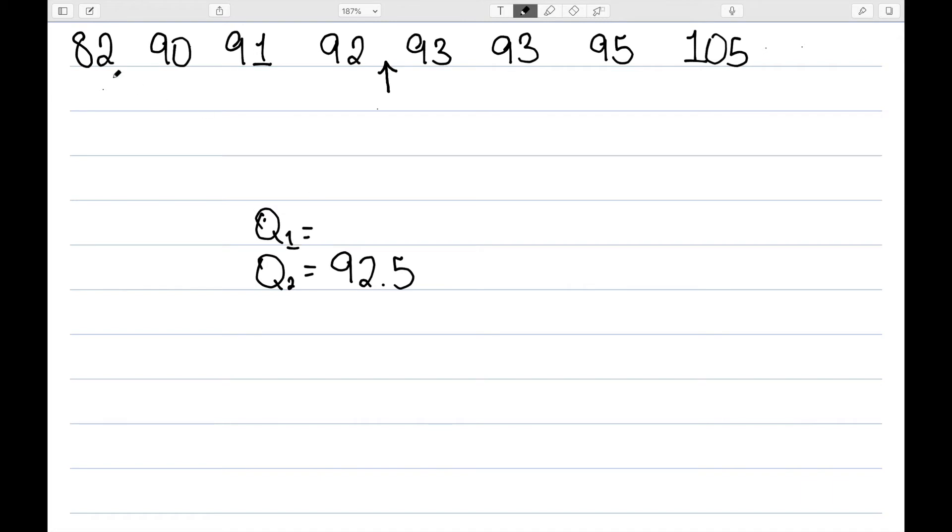For Q1, I then look at everything below that 92.5. We can see that would be halfway between 90 and 91, which is 90.5. And then Q3 needs everything above the median of 92.5. We can see that's halfway between 93 and 95, or 94.